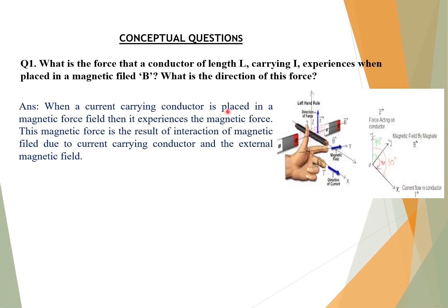When a current-carrying conductor is placed in a magnetic field, it experiences a magnetic force. This force is the result of interaction of the magnetic field due to the current-carrying conductor and the external magnetic field. A conductor of length L is placed in the magnetic field. Because current flows through it, a magnetic field is created around the conductor, and it interacts with the external magnetic field, resulting in a magnetic force on the conductor.